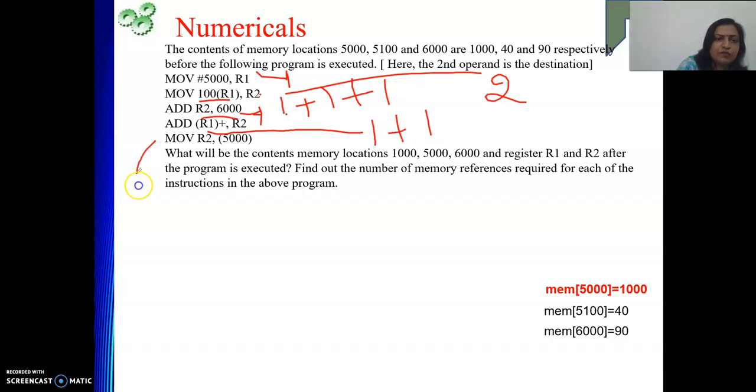And this last one. Move R2, (5000). Parenthesis is 5000. This is representing memory indirect addressing mode. This 5000 is part of your instruction. So from this 5000 memory location, we will get effective address of your operand. From that address, you will get your operand. This is how it works.